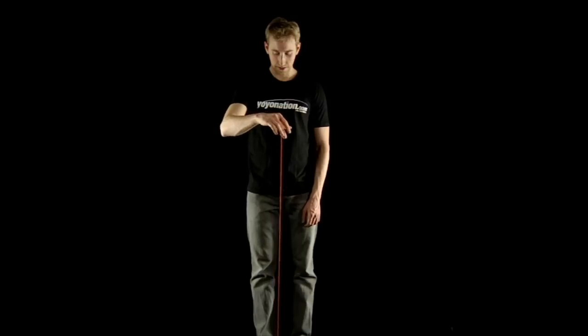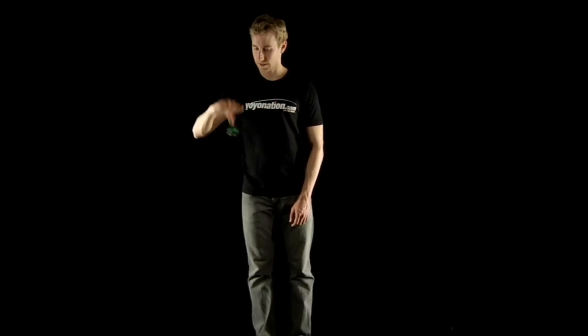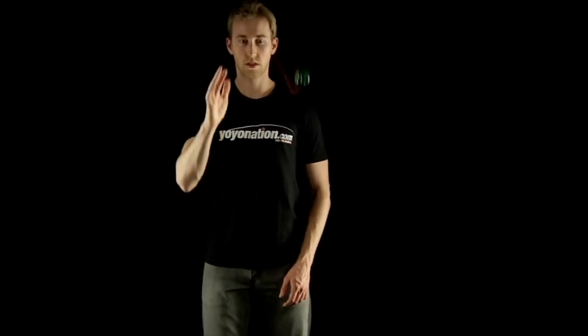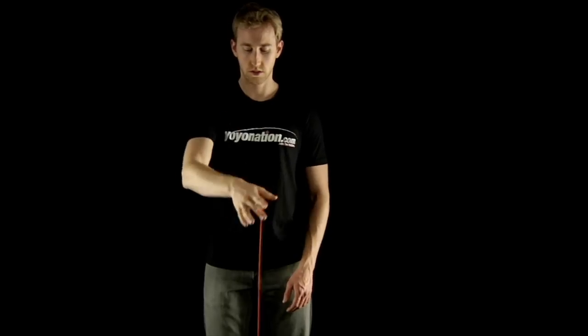You can also easily adjust string tension on an unresponsive yoyo with this trick. The Sidewinder starts with a sleeper. The stronger your sleeper, the tighter or looser you can adjust the string tension.